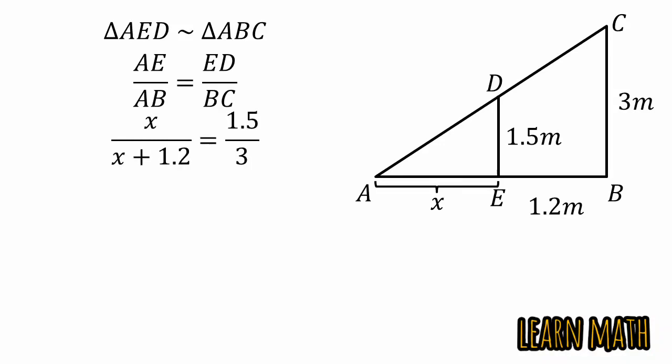Now, by cross multiplication, we will get this. Now, multiply 1.5 with X and 1.5 with 1.2, we will get this.